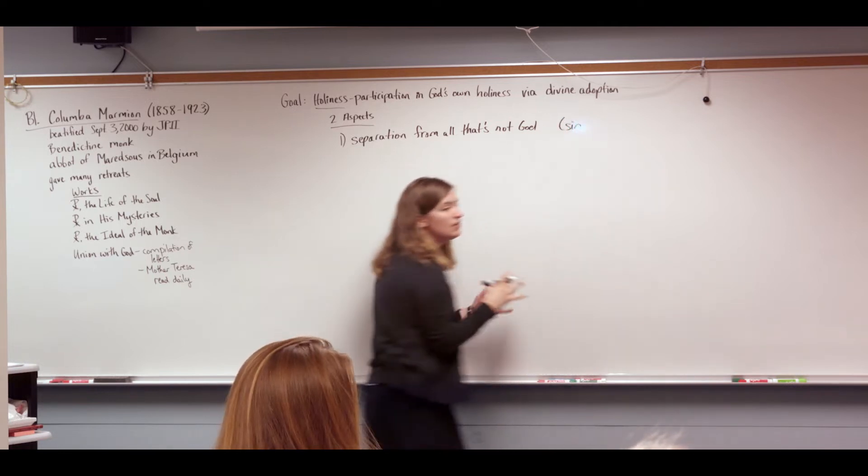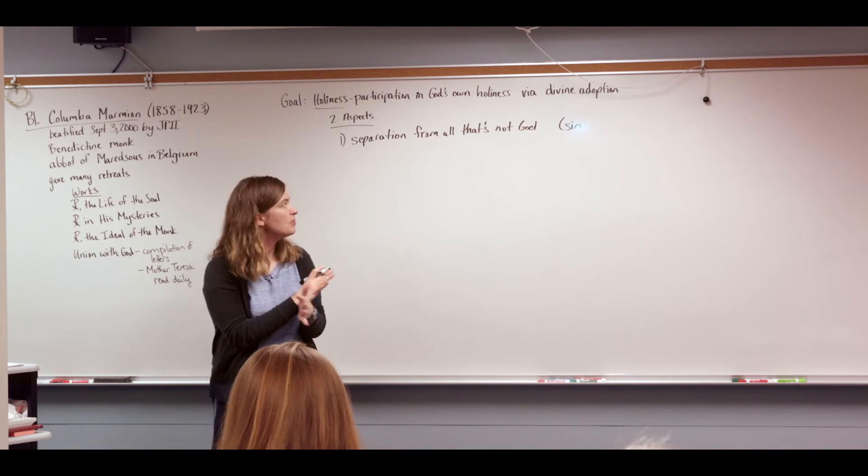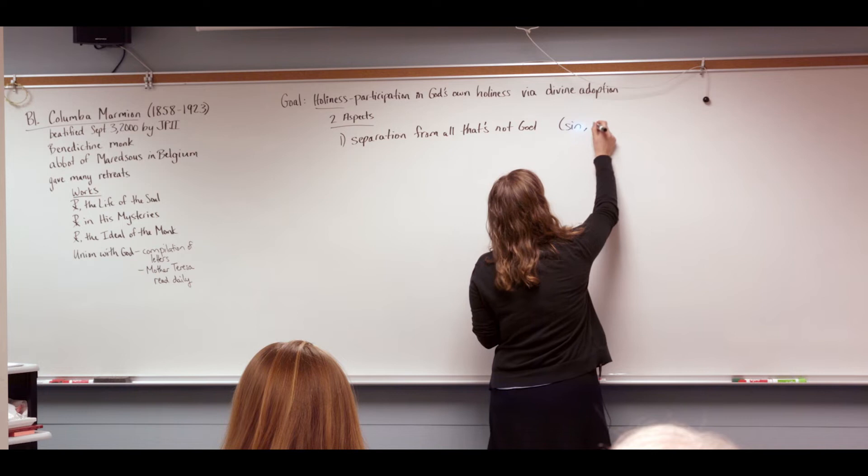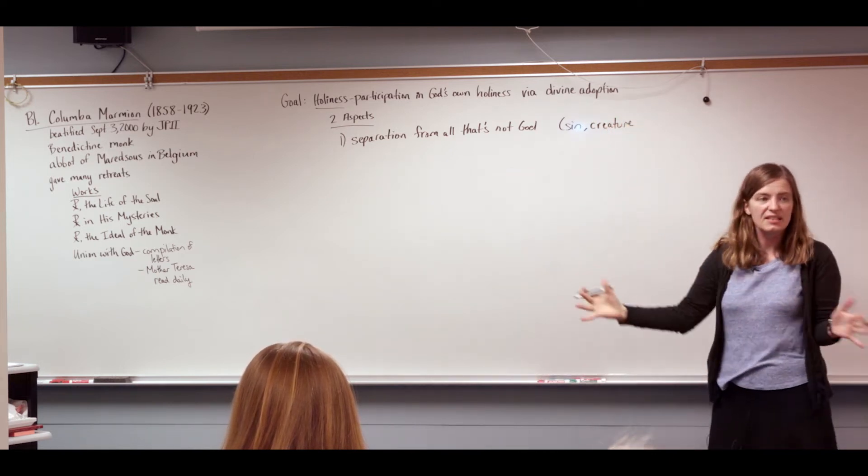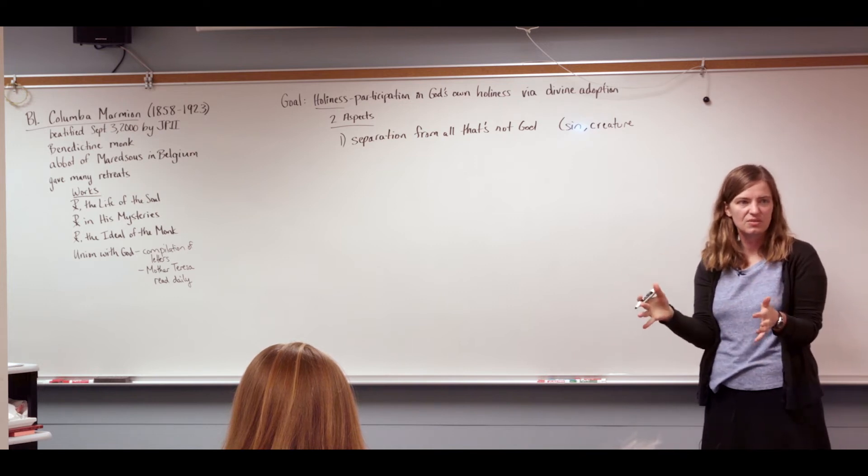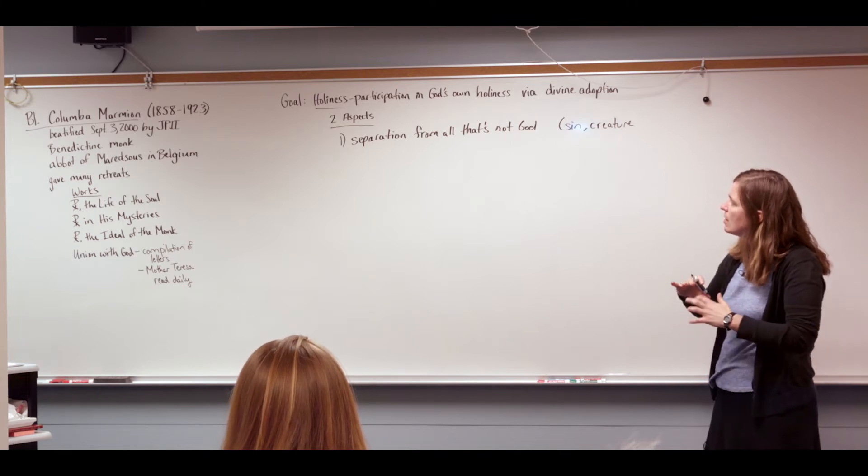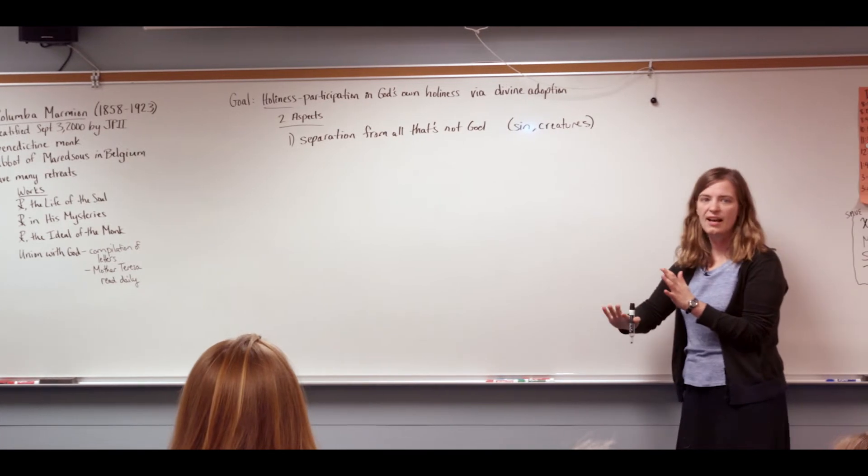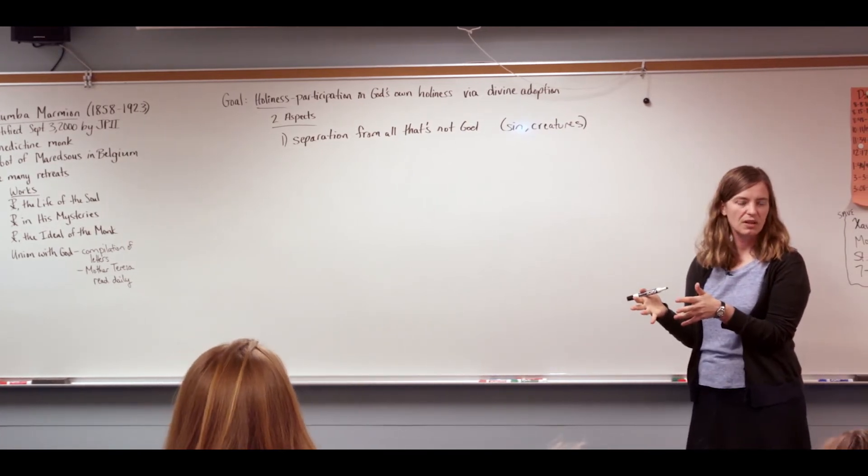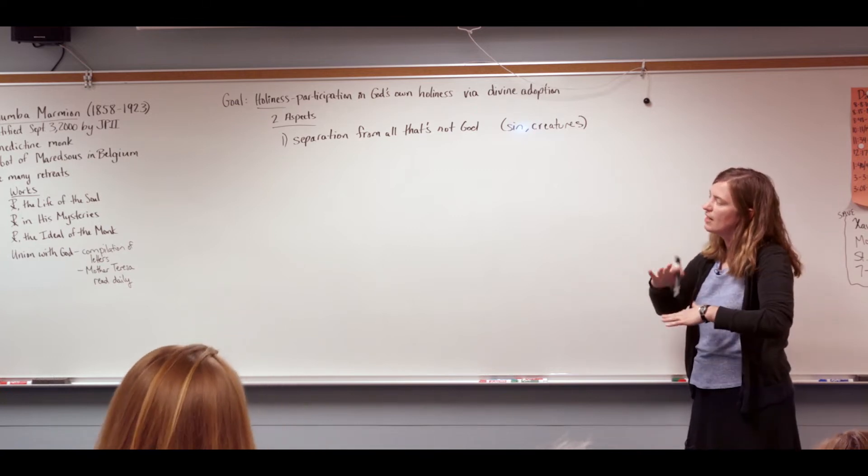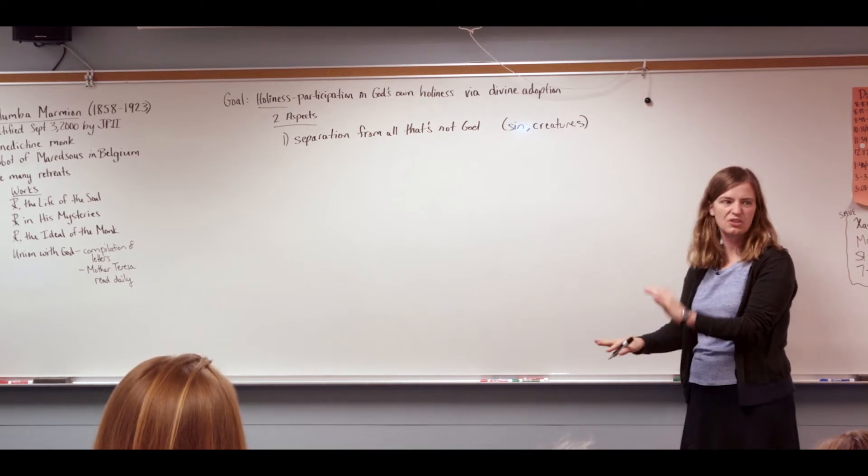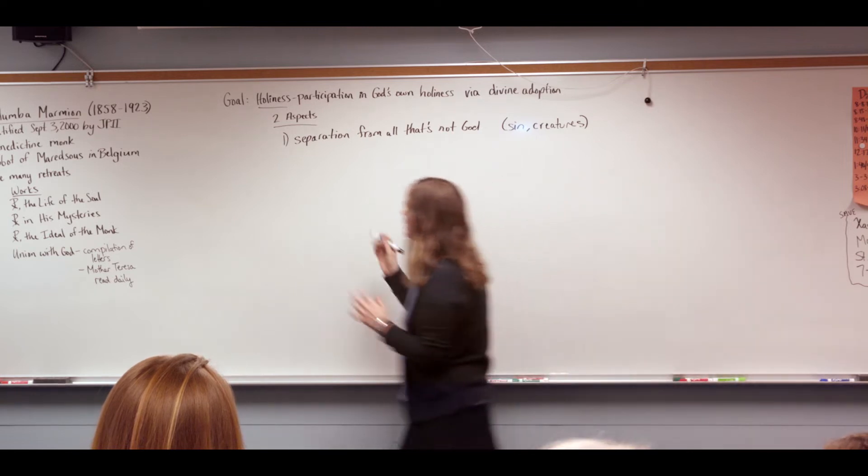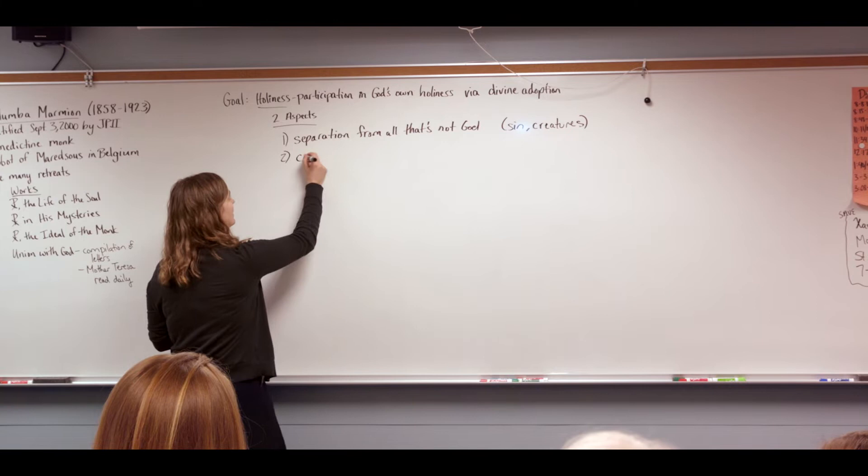So, separation from all that's not God. Okay. So, we would say definitely like an infinite distance from sin. Right? So, there's complete distance from sin. That which is created is not God. And so, in a sense, there's a complete separation from all that is created. Because God is, you know, not a creature. And so, yeah. Okay. So, we'll put that there. So, when we think about that, if we want to be like God, we've got to get rid of our sin. As well as get rid of our attachment to creatures. Right? If we want to pursue God, there's all this aspect of like asceticism. Right? So, purifying yourself of your attachment, of your worldly attachments, of your desire for goods and pleasure and all those things. So, that's one aspect is the separation from all that's not God.